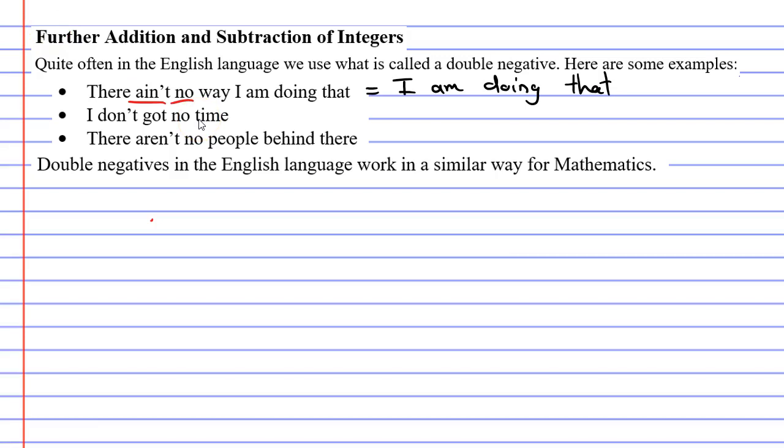Looking at the next one we have another double negative, I don't got no time. Two negatives make a positive, so this one is really saying I do have time.